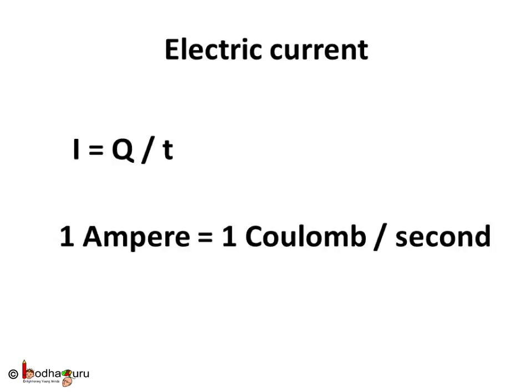I is equal to net charge Q flowing across any cross-section of the conductor in time T. So I equals Q by T and its SI unit is ampere. 1 amp of electric current means flow of electric charge equivalent to 1 coulomb in 1 second.